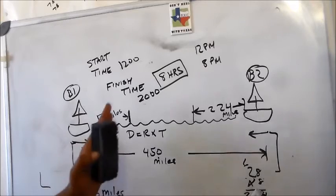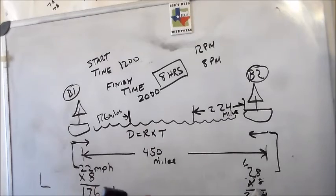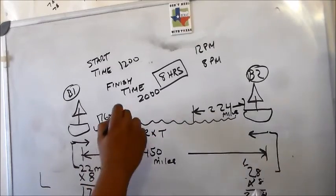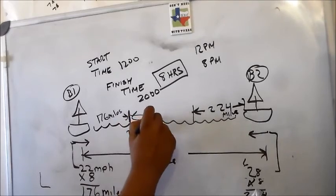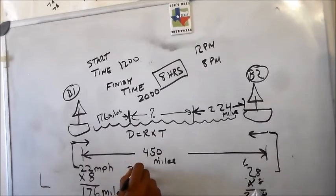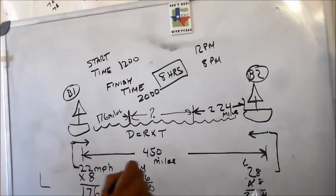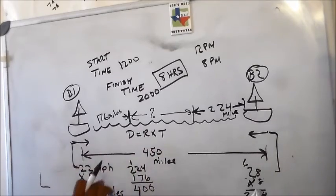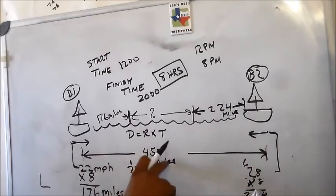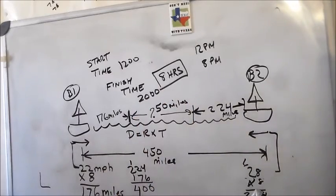If we combine these two distances, we can subtract them from 450 and then we can come up with how far they are apart. This is the unknown. We want to know how far are these guys apart. So we take 224, 176, just basic addition. These guys moved in 400. If they started out at 450 miles apart, then there is 50 miles in between the boats. And our answer is D. They are 50 miles apart.